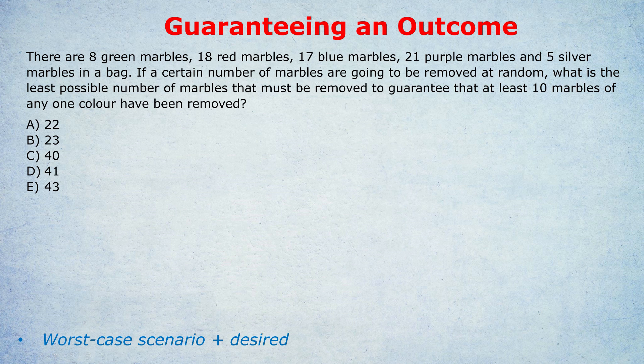Notice the wording: 'what is the least possible number of marbles?' In the last question it was 'what is the least possible number of auditions?' Because if we auditioned 21 or 22 people, we're still guaranteed to get two — but the least possible would be 20. With 20 auditions, we guarantee. So we want the same thing here. If we took out 100 marbles that would guarantee at least 10 of one type, but we want the least possible. Let's use the same logic: what is the worst case scenario?